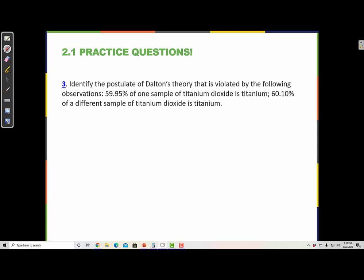Okay, identify the postulate of Dalton's theory that is violated by the following observations. 59.95% of one sample of titanium dioxide is titanium. 60.10% of a different sample of titanium dioxide is titanium.